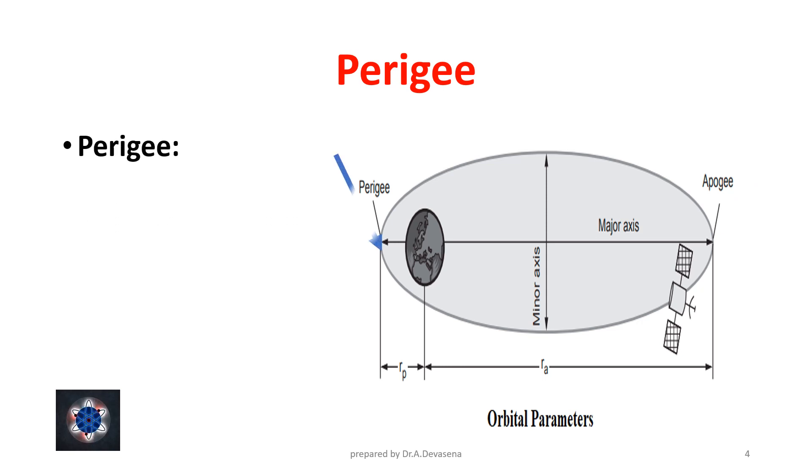Perigee. Perigee is the point of closest approach to the Earth. Here it is represented.